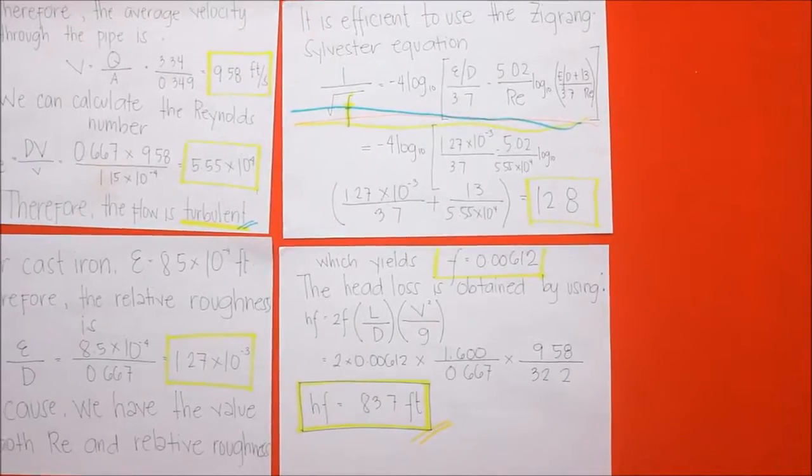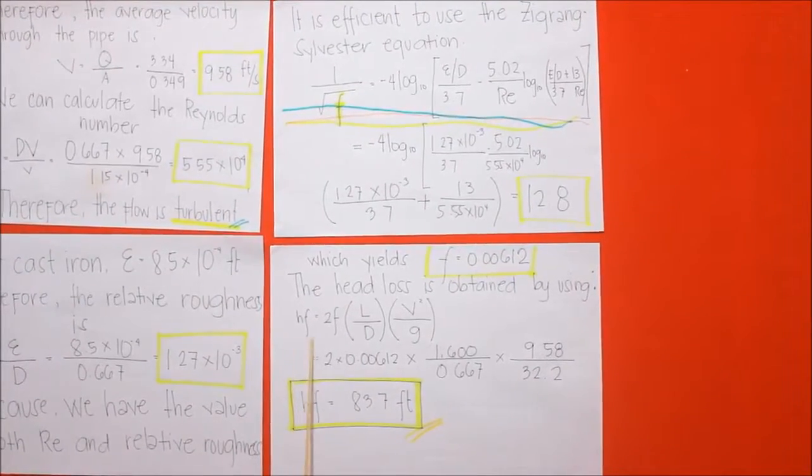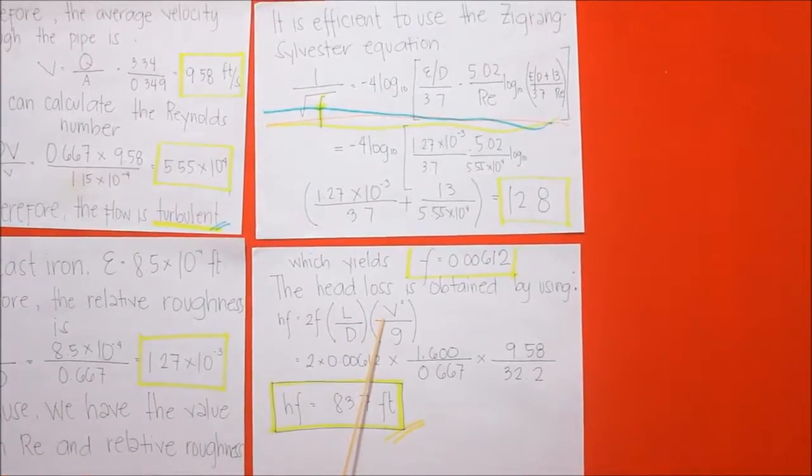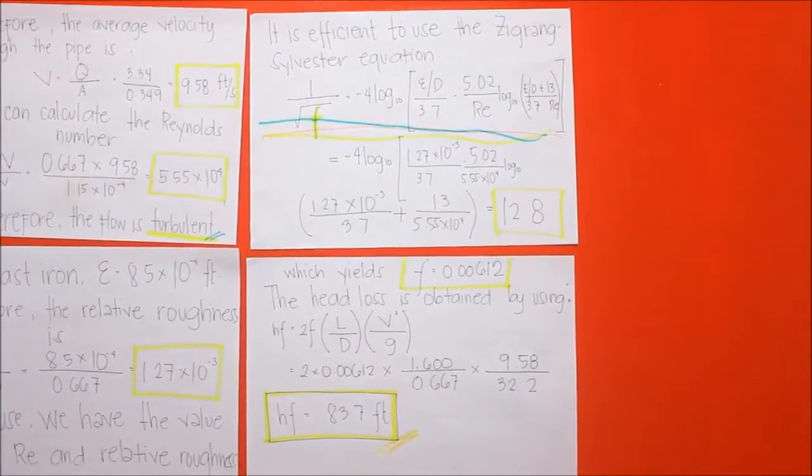The head loss is obtained by using this formula: HF equals 2F times the length over the diameter times V squared over gravity.